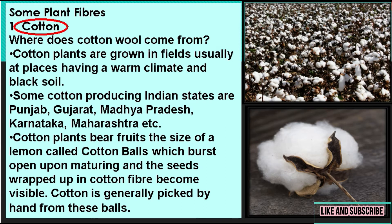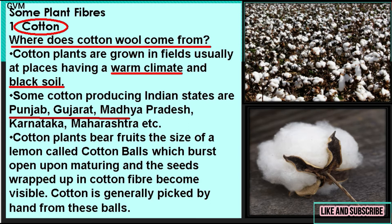Now let's discuss some plant fibers in detail. The first one is cotton. Where does cotton come from? Cotton plants are generally grown in places with a warm climate and black soil. In India, the major cotton-producing states are Punjab, Gujarat, Madhya Pradesh, Karnataka, and Maharashtra, as they have suitable warm climate and black soil for good cotton crop production. Cotton plants bear fruits the size of a lemon, known as cotton balls.